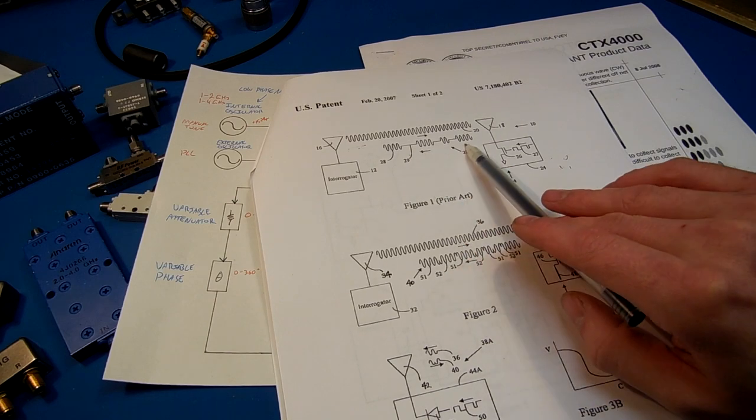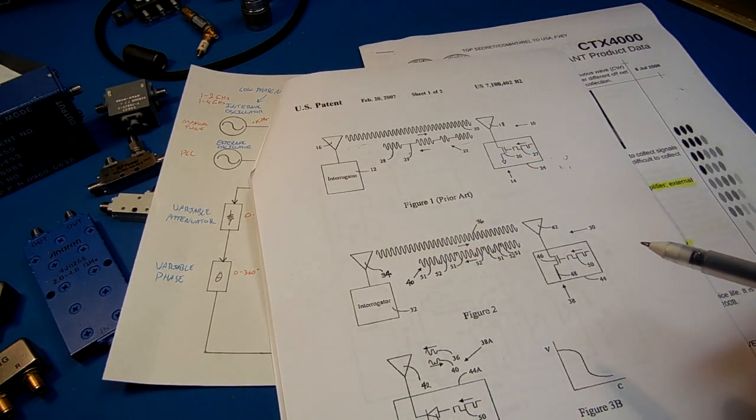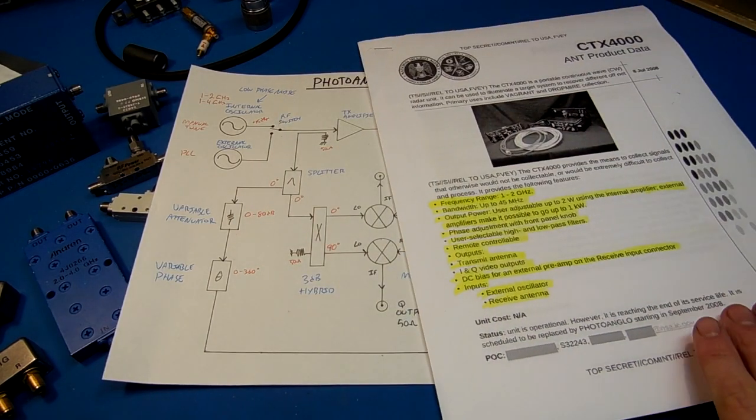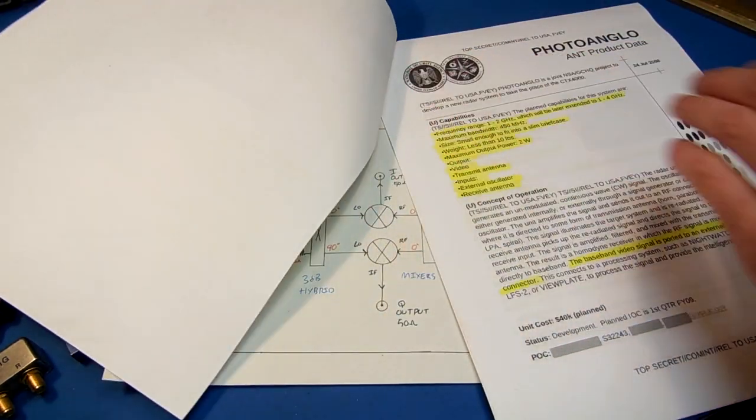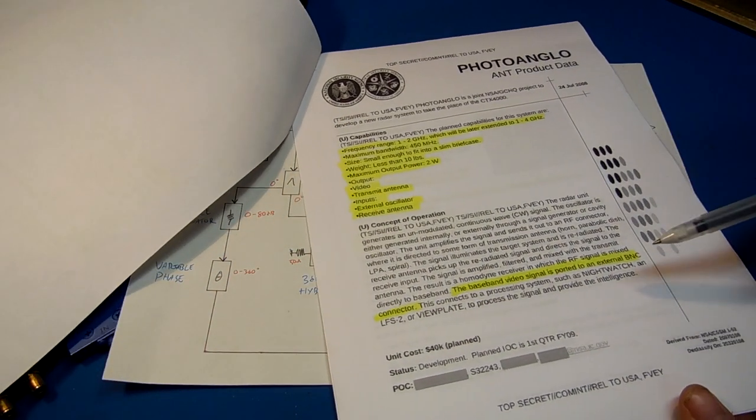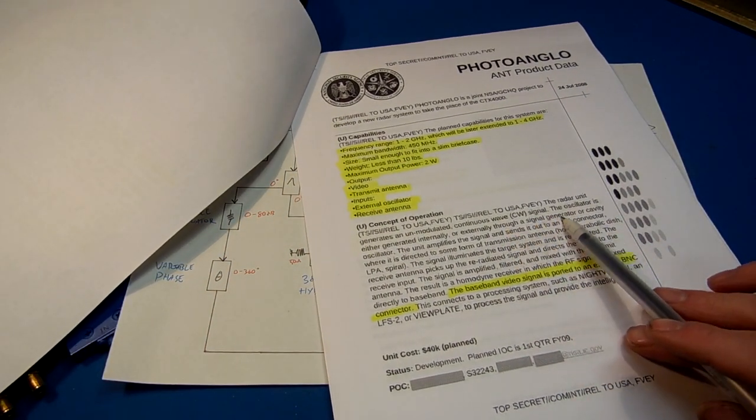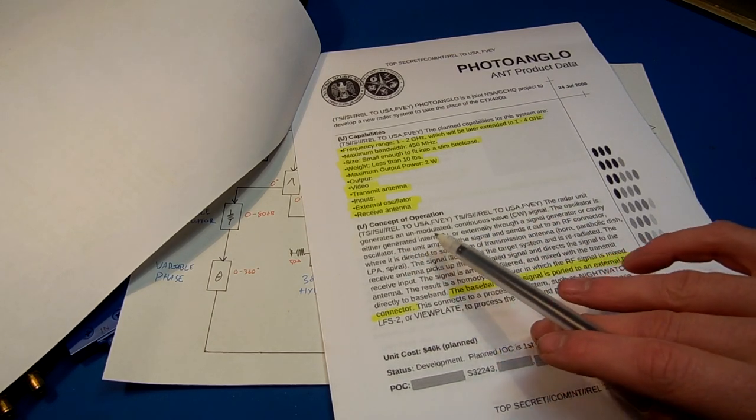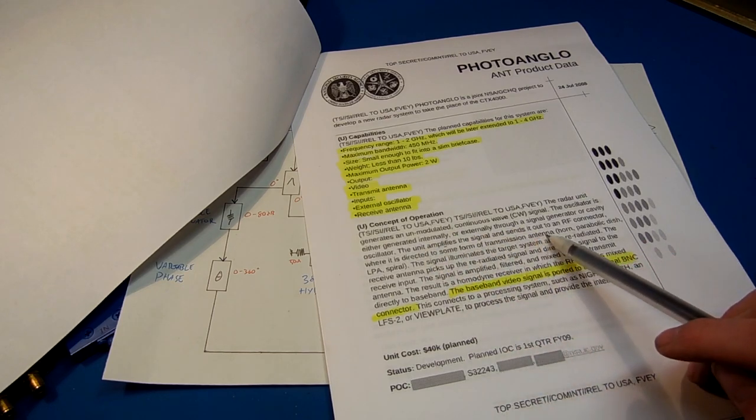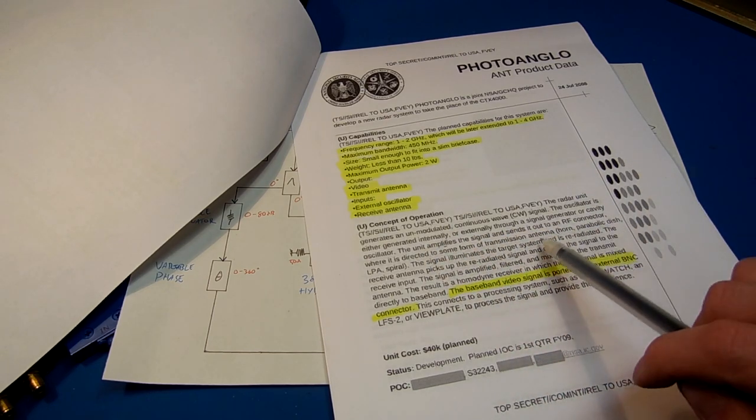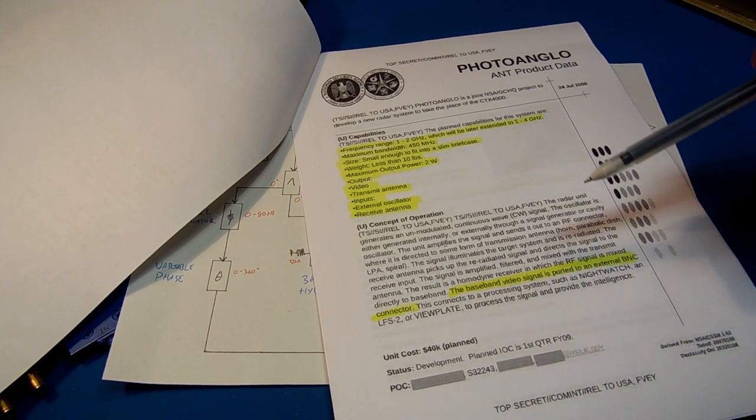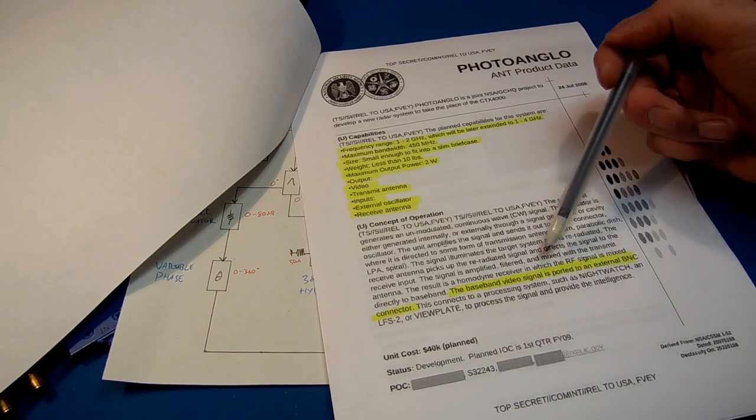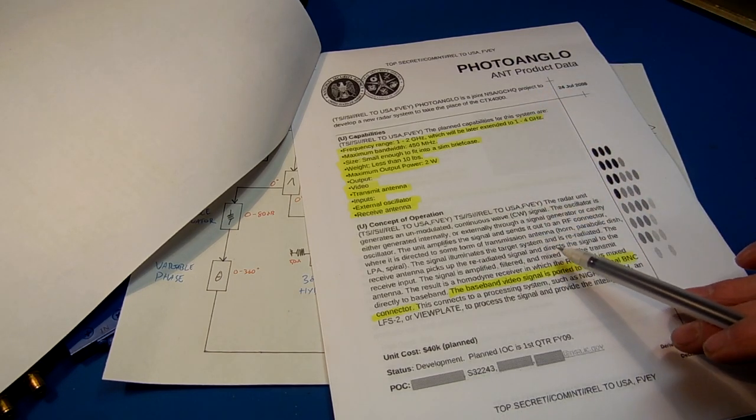The weakened return signal is remotely received by the unit. You can see they describe the general operation. It's just an unmodulated CW signal, which is generated internally or externally. It amplifies it, sends it out to the planted bug. It radiates the planted bug. And the re-radiated signal, which is called the backscatter signal, is then received by the Photo Anglo CTX-4000 unit.